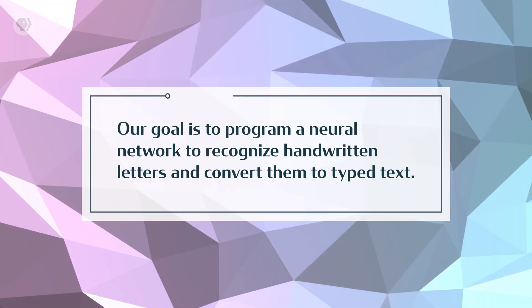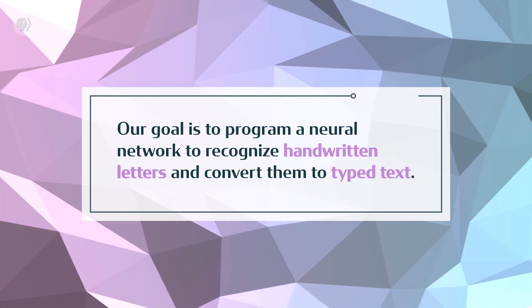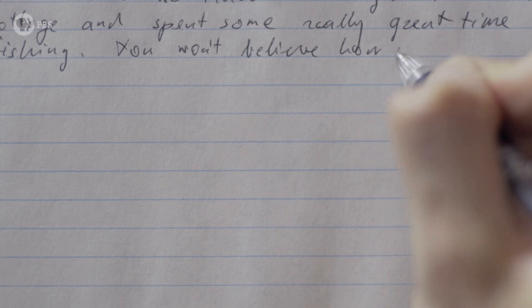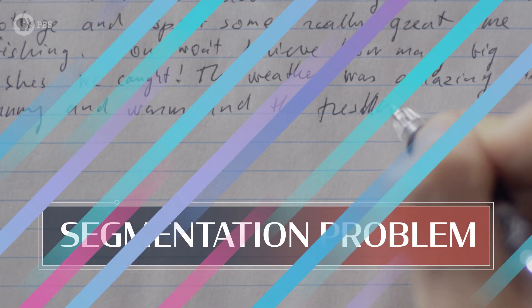Remember, our goal is to program a neural network to recognize handwritten letters and convert them to typed text. Even though this stack of papers is unreadable to me, we can work with it. And, it could actually make our project a little easier. Usually, with a project like this, we'd have to write code to figure out where one letter ends and another begins, because handwriting can be messy and uneven. That's called the segmentation problem.